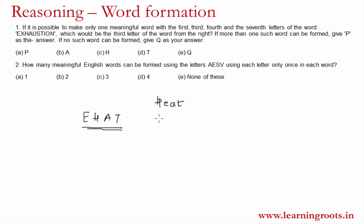Another word that can be formed is 'hate'. Once you find two words, you can simply mark P as the answer and move ahead, because the question only asks if more than one word can be formed. So as you have found two words — heat and hate — you mark P as the answer and move on.